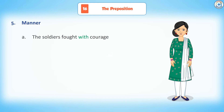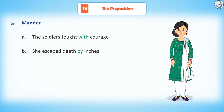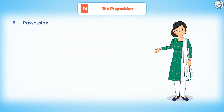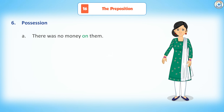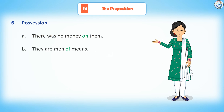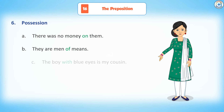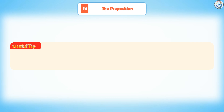Fifth, manner. The soldiers fought with courage. She escaped death by inches. Sixth, position. There was no money on them. They are men of means. The boy with blue eyes is my cousin.